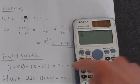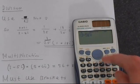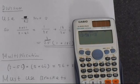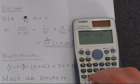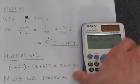We've got 3 minus 5i, and we're multiplying that by, notice the use of brackets, 2 plus 6i. That equals 36 plus 8i.